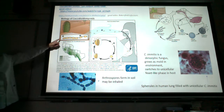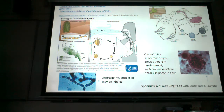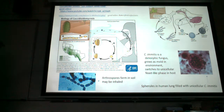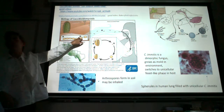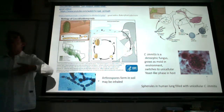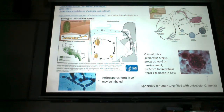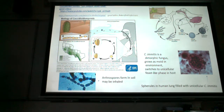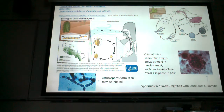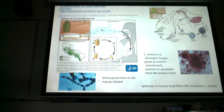In the soil, Coccidioides grows as a filamentous mold with hyphae. If you're farming or in construction and digging in the soil, it causes breaks in the hyphae and forms arthrospores — little jointed spores that become airborne and you inhale them. We get infected through inhalation of arthrospores. In our lungs, Coccidioides switches to a unicellular yeast-like form — that's why it's called dimorphic: filamentous mold in the environment, unicellular yeast-like form in humans.